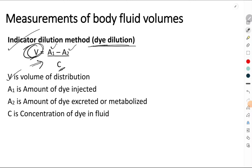In this formula, V stands for volume of distribution, A1 stands for amount of dye which is injected, A2 stands for amount of dye which is excreted or metabolized, and C stands for the concentration of dye in the fluid of that particular compartment which we want to measure.